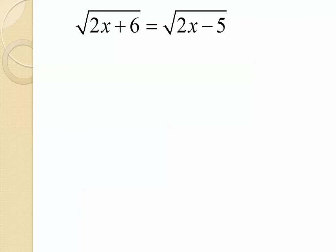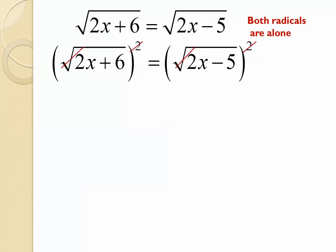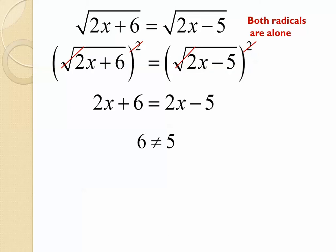Finally, we have a problem with a radical on both sides. If they're alone, we simply square both sides to get rid of the radicals. All the square roots and the squares cancel out, and we're left with 2x plus 6 equals 2x minus 5. We subtract 2x from both sides — the 2x terms cancel — and we're left with 6 equals negative 5. That's not a true statement, which means this would never work. We can't take a number, add 6, and get the same result as subtracting 5. This is a no solution.